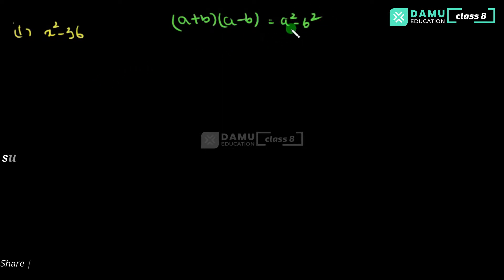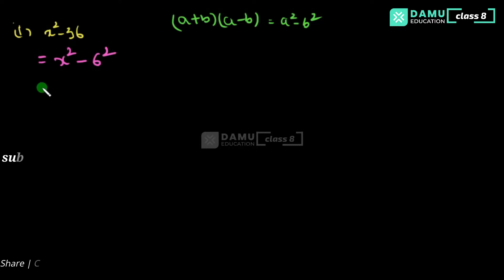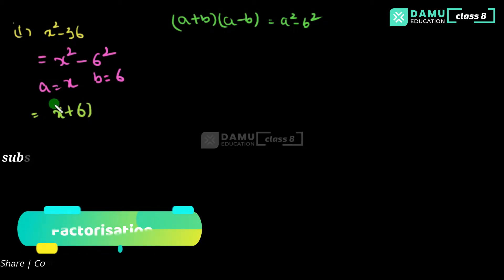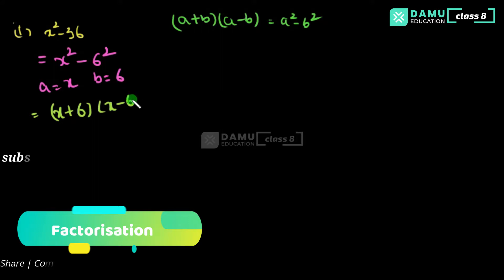Here there is a single minus and two perfect square numbers. So for x squared minus 36, you can write it in the format of x squared minus 6 squared, since 36 is a perfect square of 6. So a equals x and b equals 6. Therefore the factorization is x plus 6 into x minus 6.